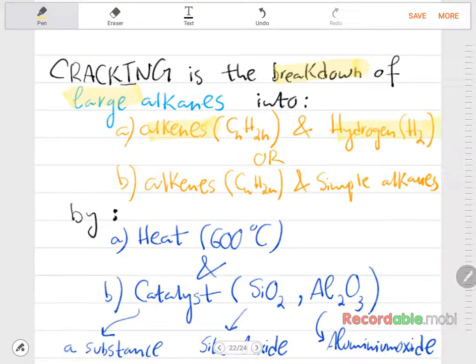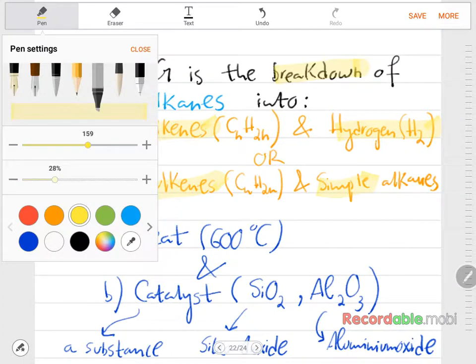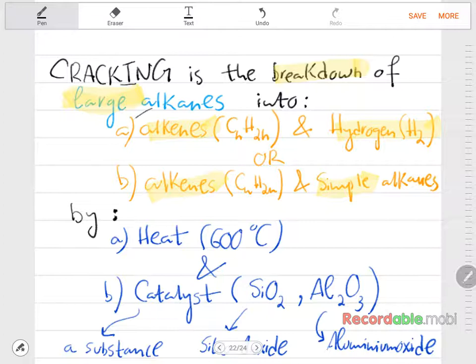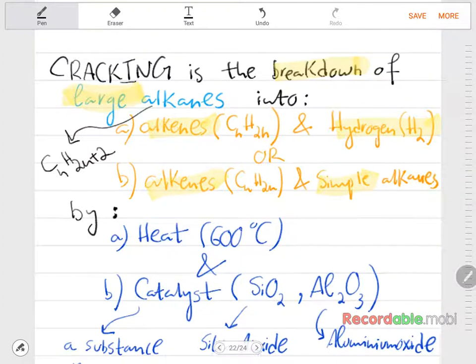Or alkenes and simple alkanes, so simpler, smaller alkanes in comparison to the large alkane. A quick reminder: the general formula of the alkanes is CnH2n+2.